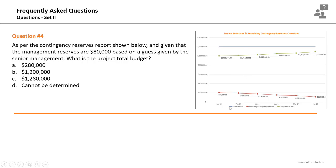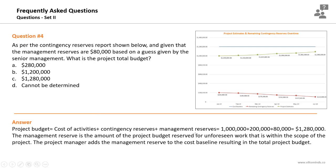Looking at the chart, we have the cost baseline, remaining contingency reserves, and project estimates. At the beginning of the project, since the question asks about the total project budget, the cost baseline is $1,200,000 USD, which is the sum of contingency reserves and project activity cost estimates: $1,000,000 plus $200,000. Adding management reserves of $80,000 gives a total project budget of $1,280,000 USD.